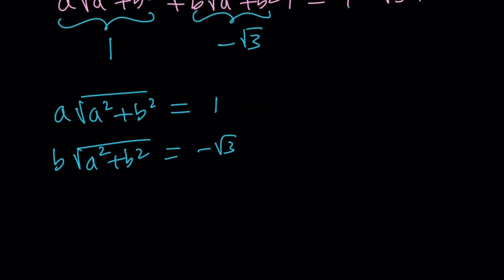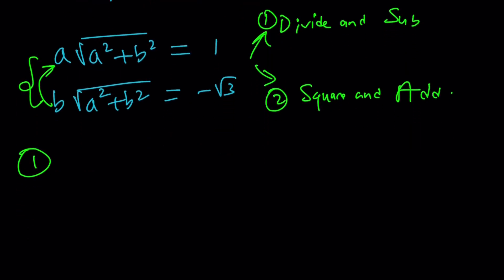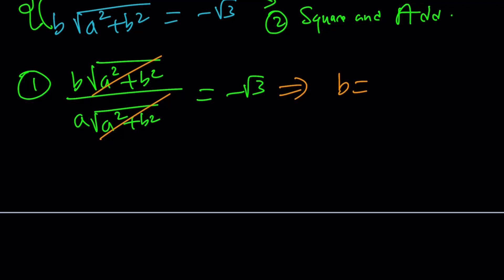Well, I can think of two methods. First one is called divide and sub. And the second method can be summarized as square and add. Let's do it. Let's start with the first one. Divide and sub. So, I'm going to divide the second equation by the first because I want to get a radical, not the reciprocal of a radical. So, B times the square root of A squared plus B squared divided by A times the square root of that equals negative root 3. Awesome. Now, these expressions cancel out, leaving us with something nice. B equals negative root 3 A.